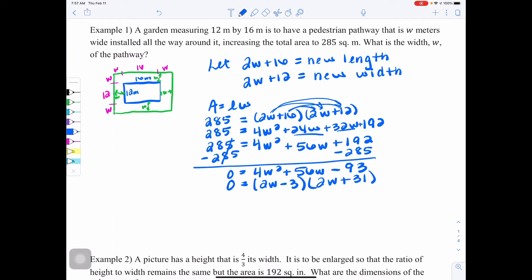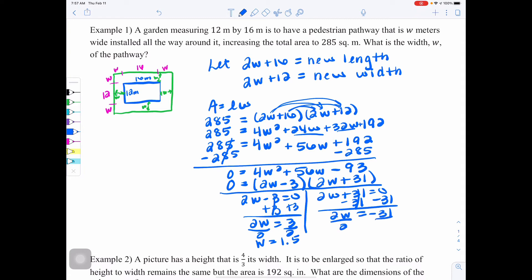Now that we've factored, we're going to take each factor pair and set it equal to 0 using our zero product property. So 2W minus 3 equals 0 and 2W plus 31 equals 0. We would add 3 to both sides, so we get 2W equals 3. Then to get W alone, we have to divide it by 2, so we get W is 1.5. Then over here, we are going to subtract 31 to get 2W equals negative 31. Divide by 2 to get W alone, and we get W equals negative 15.5.